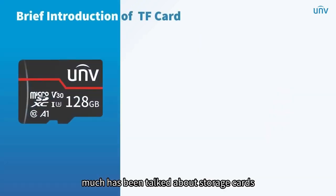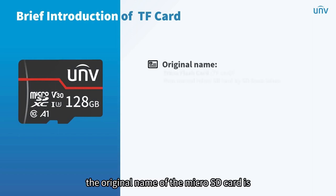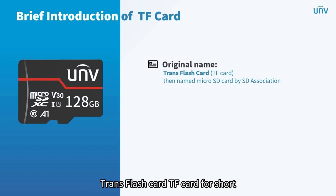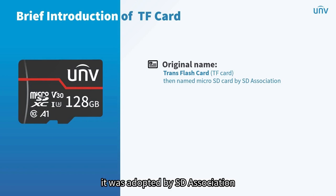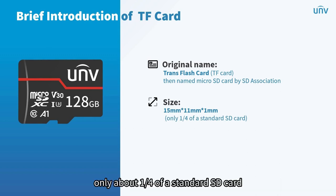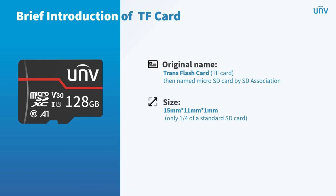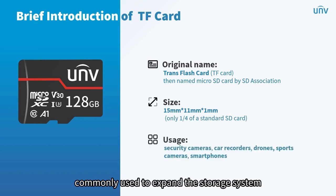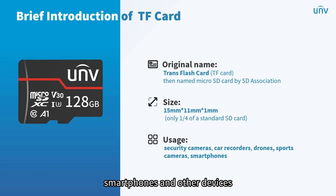So what exactly is a TF card? The original name of the micro SD card is Trans Flash card, TF card for short — a kind of micro flash memory card. It was adopted by the SD Association before being named micro SD card. The size is 15 mm long, 11 mm wide, and 1 mm high, about a quarter of a standard SD card, equivalent to the size of an adult's thumbnail. Micro SD cards are commonly used to expand the storage of security cameras, car recorders, drones, sports cameras, and smartphones.